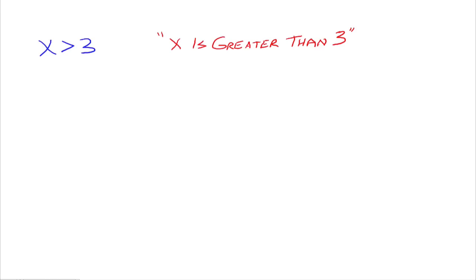Here's an example where we have a variable involved. We have x is greater than 3. What that means is we're looking for all the numbers for x that would make this a true statement. There are lots of numbers greater than 3 that would make this true — any number larger than 3: 4, 5, 6, 1,000, any of those. We have an infinite number of numbers that satisfy this inequality and make it true.